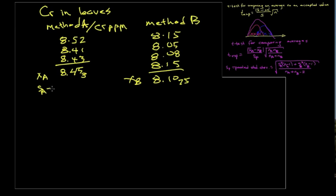Method A has a standard deviation of 0.0585. And method B has somewhat similar standard deviation of 0.0585. So we want to decide whether these two are significantly different at the 95% confidence level.